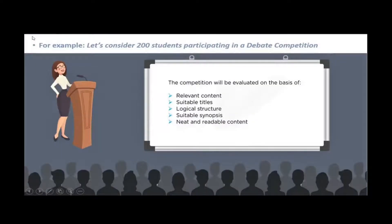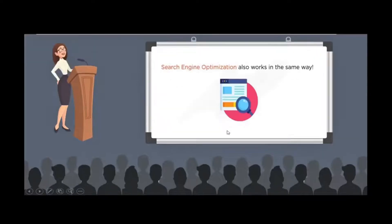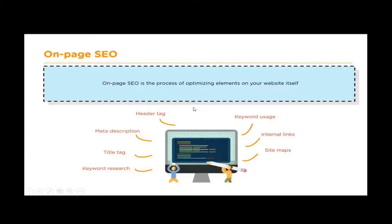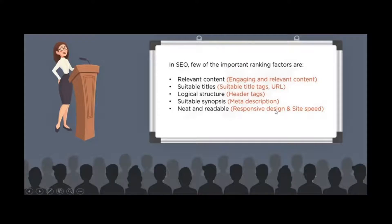Let's use a competition analogy: consider 200 students participating in a debate competition. What do we evaluate? The relevant content, suitable title, logical structure, suitable synthesis, and neat, readable content. That is how search engine optimization works. In SEO, the ranking factors include engaging relevant content, suitable titles, the URL, logical structure, header tags, meta description, responsive design, and site speed.